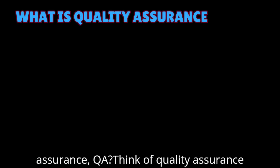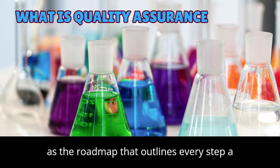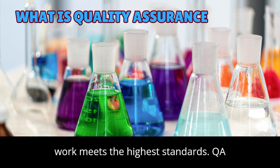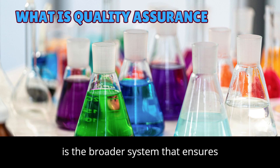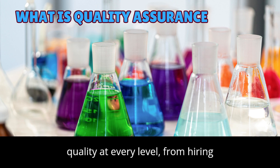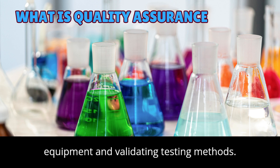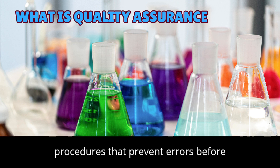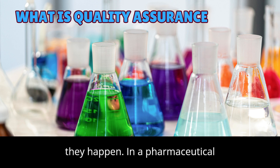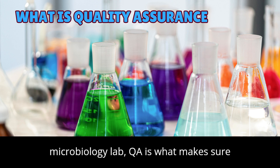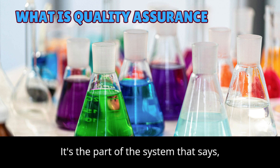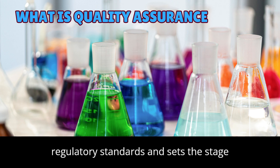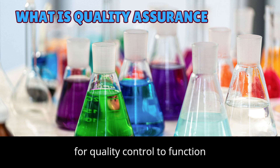What is quality assurance (QA)? Think of quality assurance as the roadmap that outlines every step the laboratory must take to ensure that its work meets the highest standards. QA is the broader system that ensures quality at every level, from hiring skilled personnel to calibrating equipment and validating testing methods. It's about creating and following procedures that prevent errors before they happen, making sure the right processes are in place and setting the stage for quality control to function effectively.